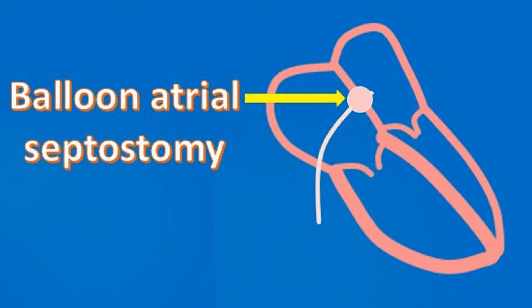In balloon atrial septostomy, the small opening between the upper chambers is enlarged using a balloon attached to the tip of a thin tube. The tube is usually introduced through the blood vessel in the navel if it is done soon after birth. If it gets delayed, the blood vessel in the groin may be used, as the blood vessel in the navel closes off.